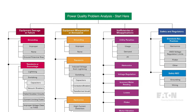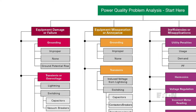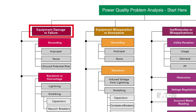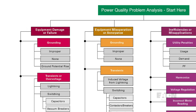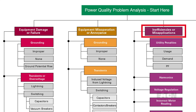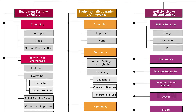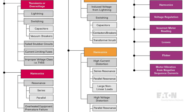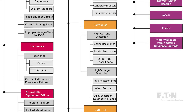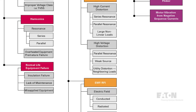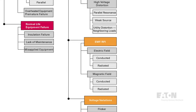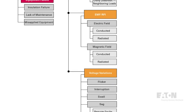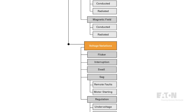Here's a simplified method, or starting point, for looking at power quality problems. With this model, you would start at the top, defining what the problem actually is: equipment damage or failure, equipment misoperation or annoyance, or inefficiencies or misapplications. This graphic is not intended to allow you to simply connect the dots and solve the riddle, but it could be used to help spark some ideas about which power quality problems might be causing the issue. Use this as a guide for determining potential issues, but use your common sense to arrive at your final conclusion.